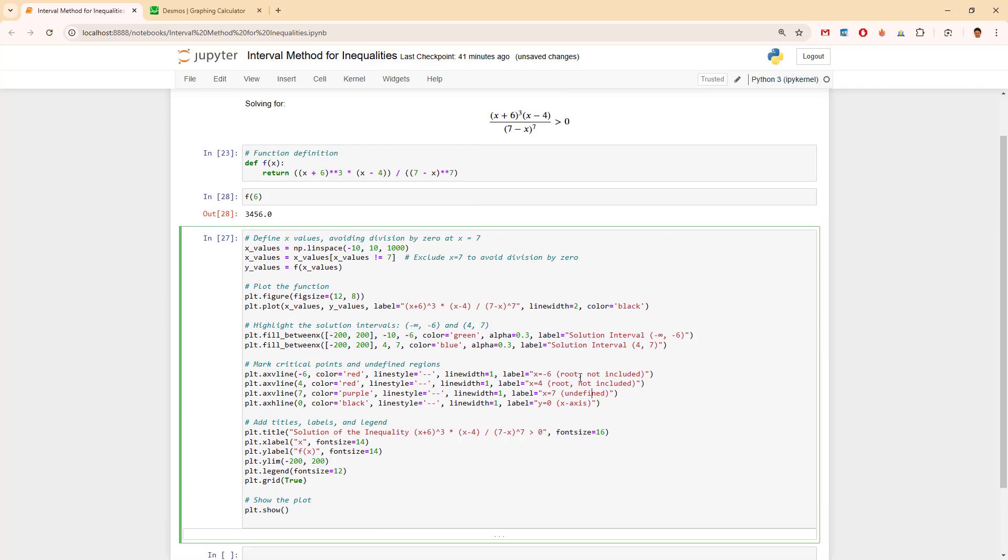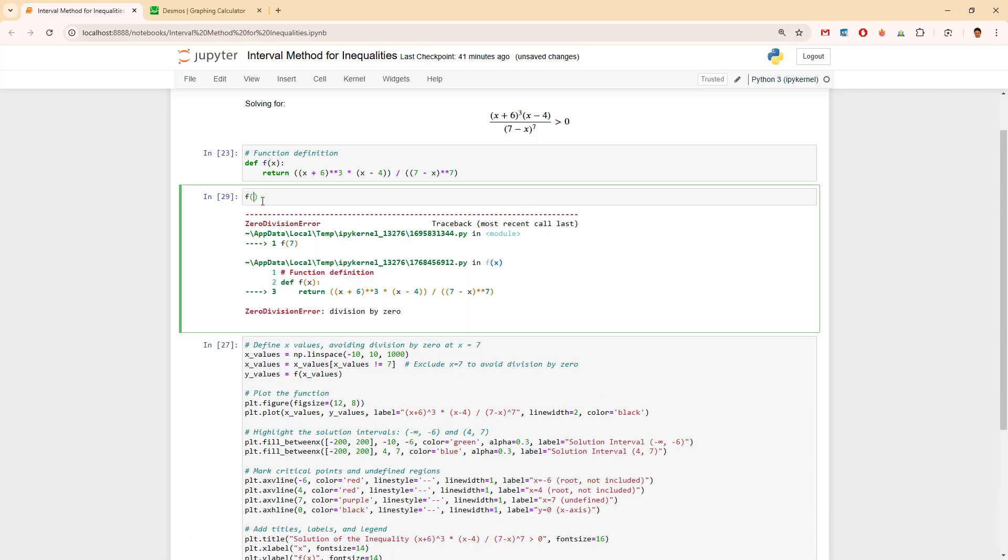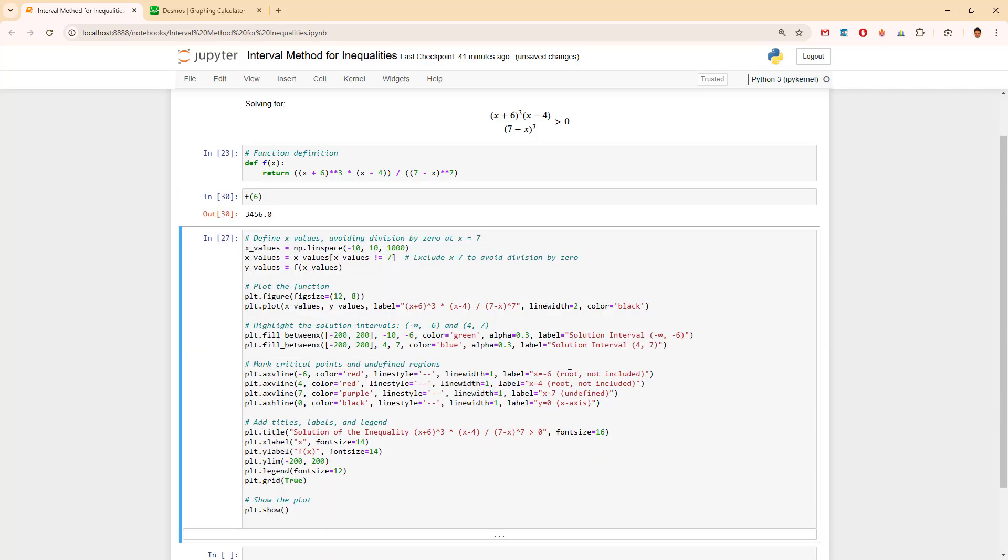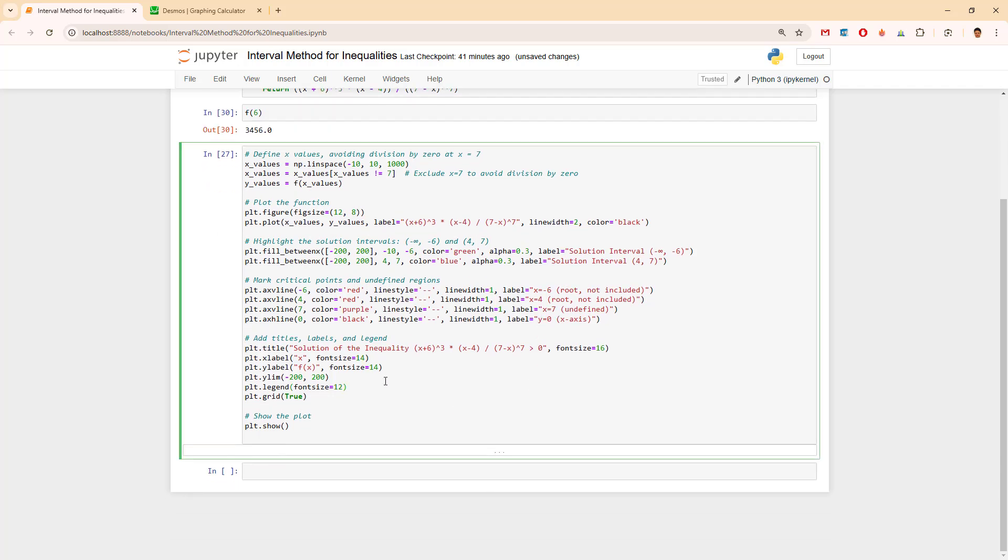We have a division by 0 if we put f like 7 here. So that's why. And we have nice title for the whole thing and showing the plot at the end.